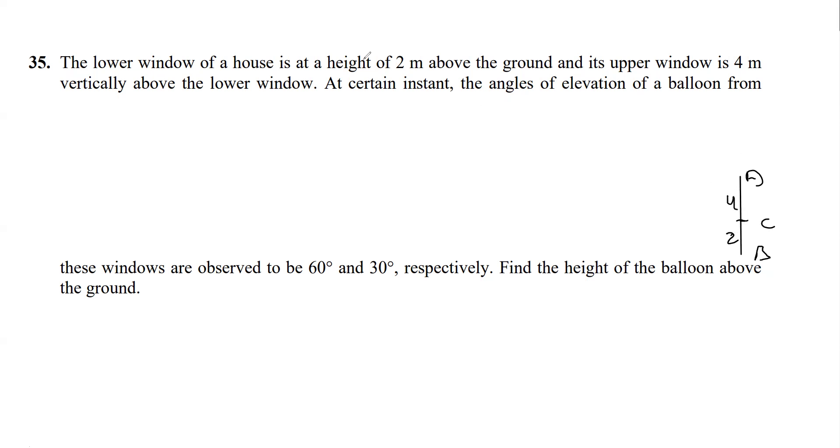Now they are observing a balloon. Let's say this is the base or ground level and there is a balloon at point P over here. The angles of elevation are found to be 30 and 60.